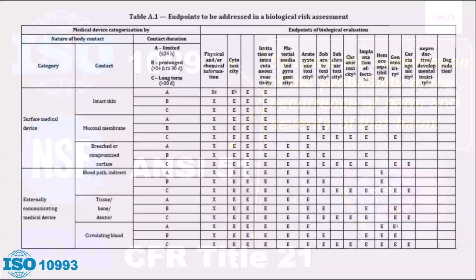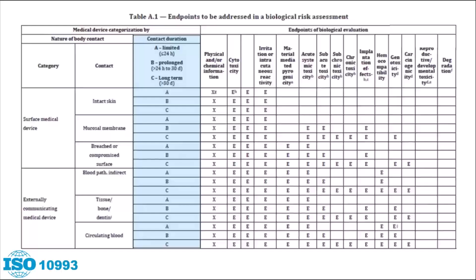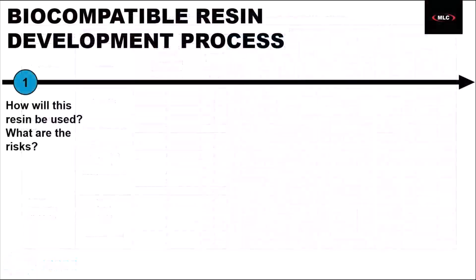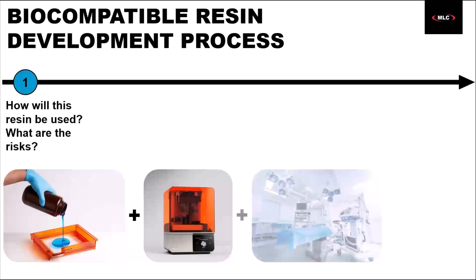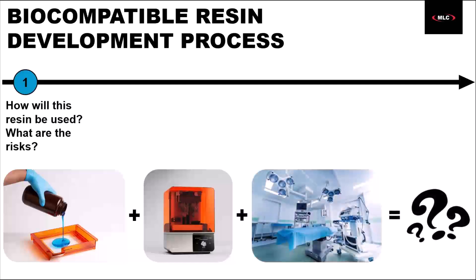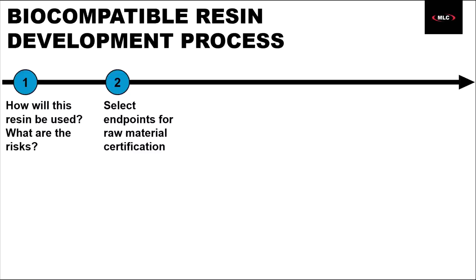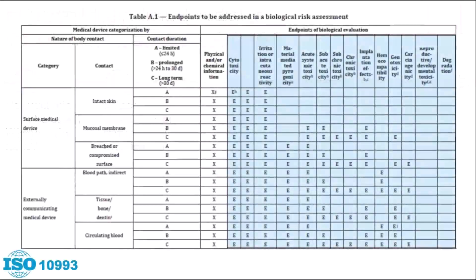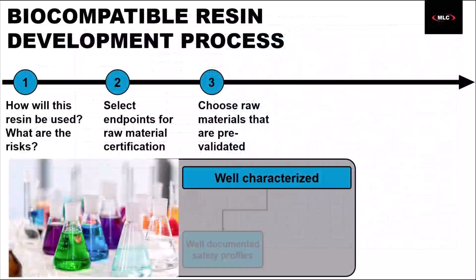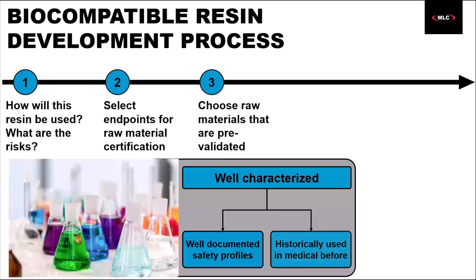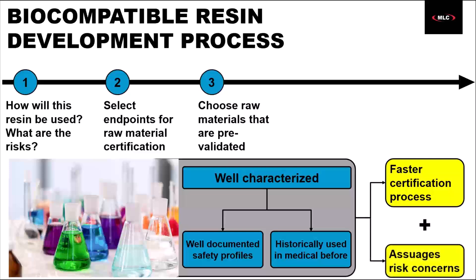For biocompatibility, ISO 10993 has this huge table for evaluating biological risk, analyzing everything from contact type and contact duration to chemical makeup and toxicity tests required. During development of their biocompatible resins, Formlabs evaluates intended clinical use to address risks associated with how their customers could use these resins. By understanding the intended clinical use, Formlabs can select the proper endpoints for assessing the raw materials comprising the resin. And Formlabs selects raw materials that are well-characterized with safety profiles that are well-documented or historically used in medical devices, which both accelerate the certification process and assuage concerns from customers and patients.